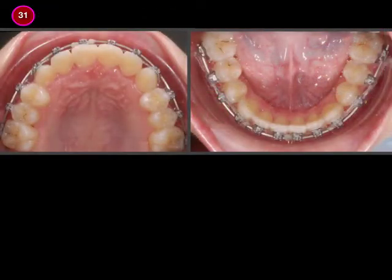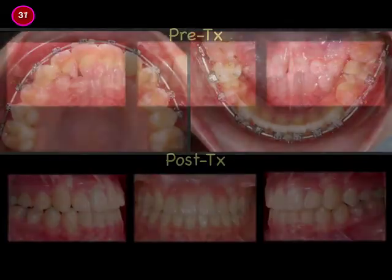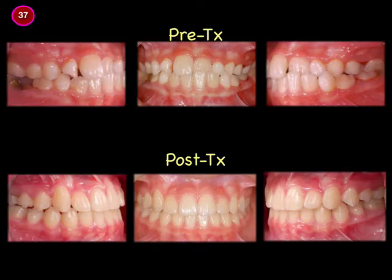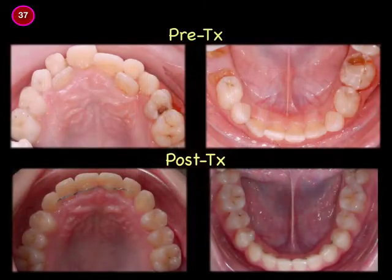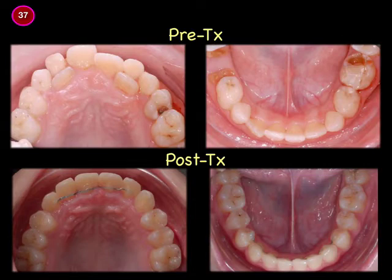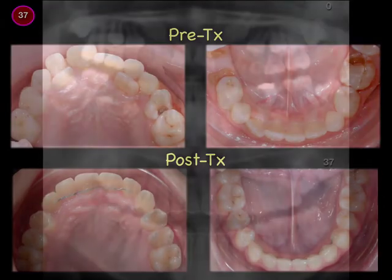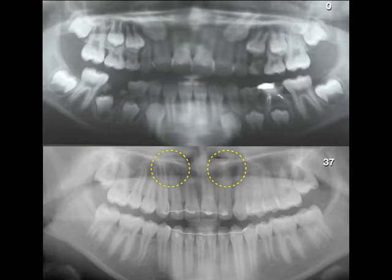At the 31st month both arches were leveled and aligned. Then we finished the case in the 37th month. The girl now has a balanced profile and a beautiful smile arc. You could see the upper arch had been aligned and developed successfully, and the lower space was maintained for its successor. From the panel we could see that the two impacted canines were dragged into occlusion without harming the roots of the lateral incisors.